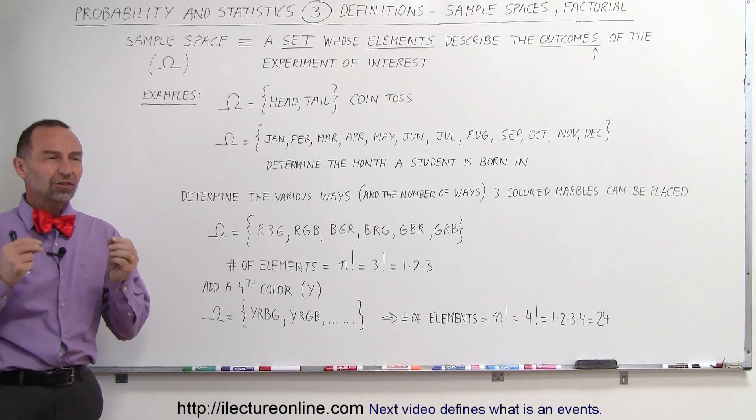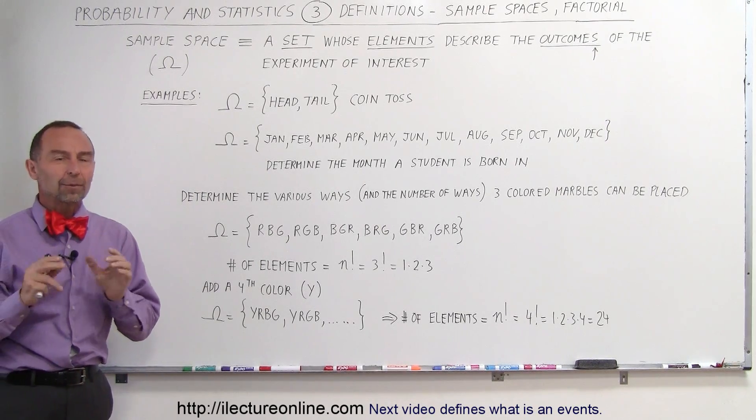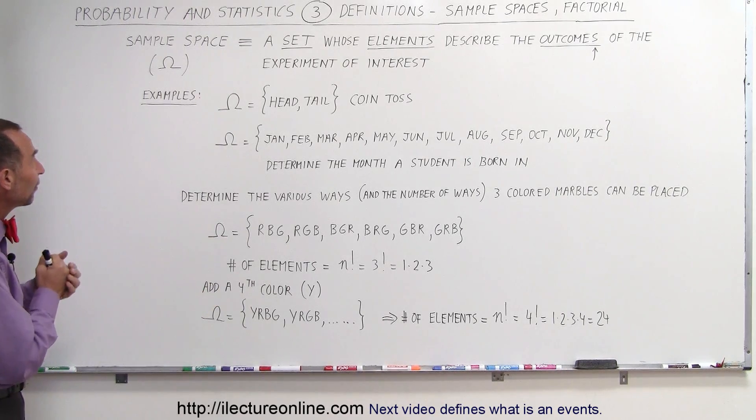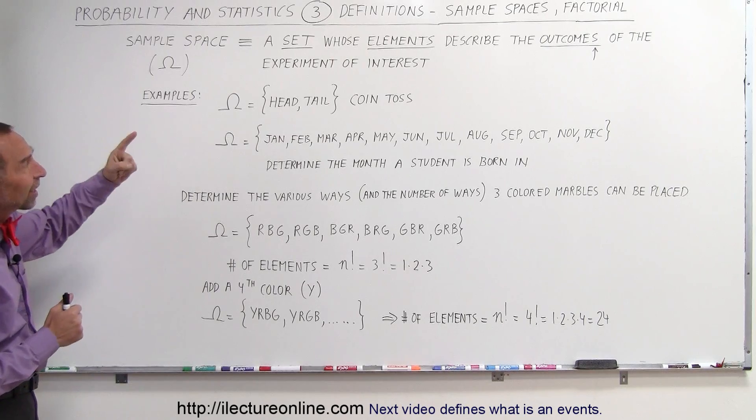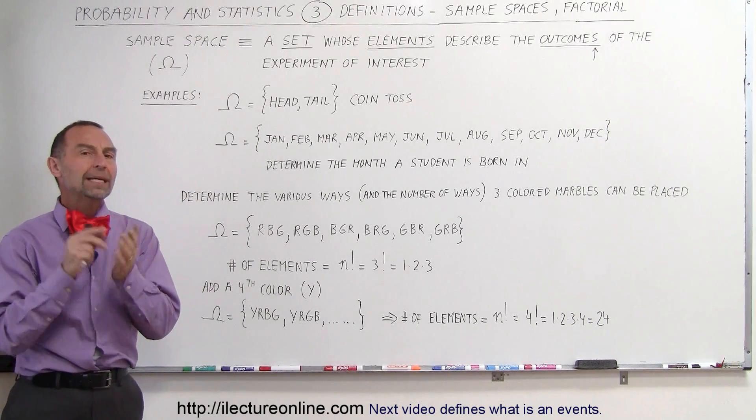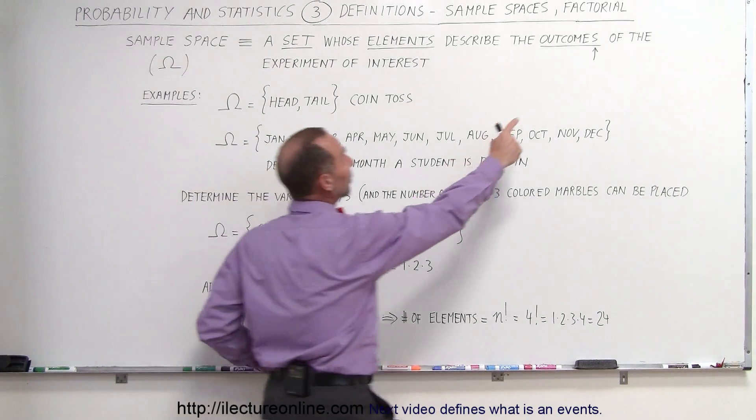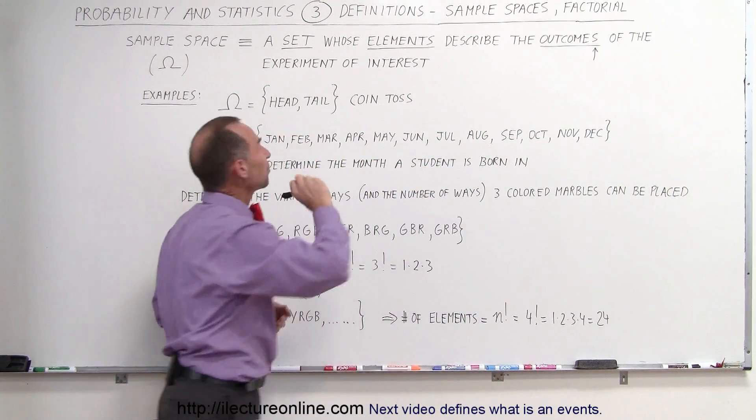Now sample spaces are just a particular kind of set. Remember, a set was a conglomeration of elements. But specifically, a sample space is a set whose elements describe the outcome or outcomes—it could be more than one, that's why I put an arrow there, it could be plural—of the experiment of interest.